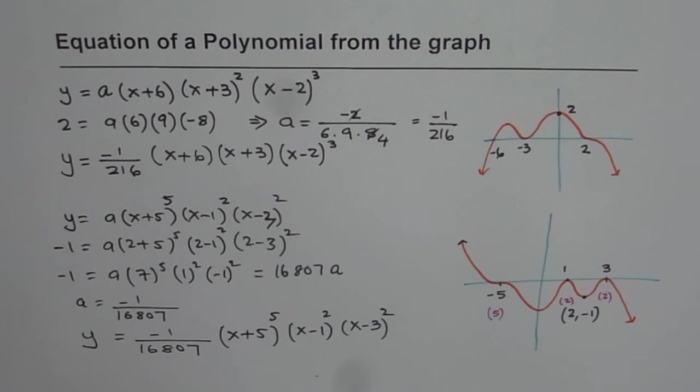I hope with this example you understand that if we know the zeros, then we can get equation of the family of polynomials and if we know a point on the graph, then we can specifically write equation of that polynomial. I hope that helps. Thank you and all the best.